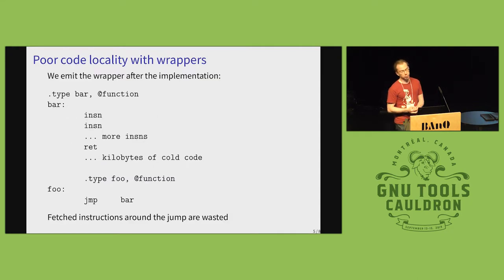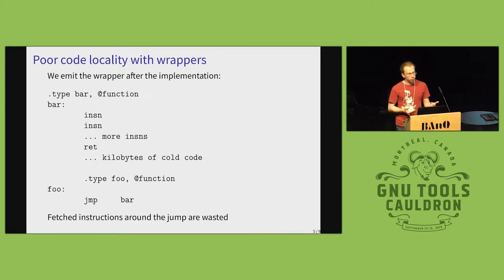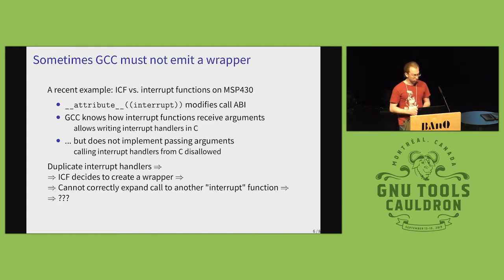In GCC there is also the issue that the way we create wrappers is somewhat inefficient, because we emit each wrapper after the function that holds the implementation. So we have the pattern where the wrapper function performs a backward jump to the actual implementation. When the CPU fetches the jump instruction it also fetches a few instructions just around it, but those fetched instructions will not be used because we are not going to be executing them. That is wasted work each time a wrapper is called, and naturally we should be able to do better.